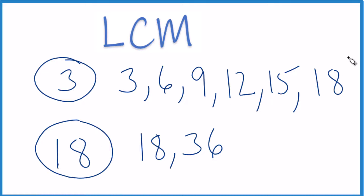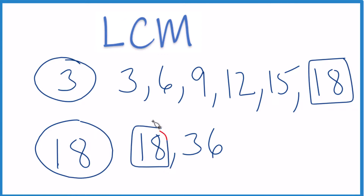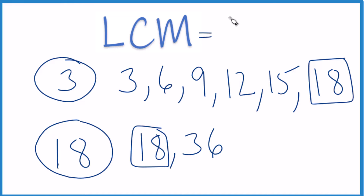You get the same answer. And there it is — 18. That is a common multiple between 3 and 18. And since it's the first one we found, it's the lowest common multiple. So in answer to our question, the LCM for 3 and 18 turns out to be 18.